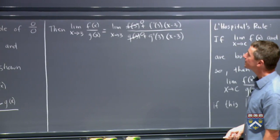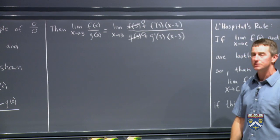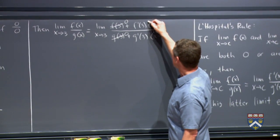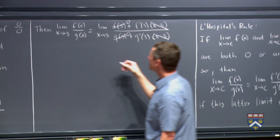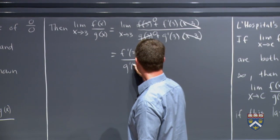And then what can we do? We're just going to be left with f'(3) times (x - 3) over g'(3) times (x - 3). So the next natural thing to do is to cancel the (x - 3)'s. And what are we left with? We're just left with f'(3) over g'(3).